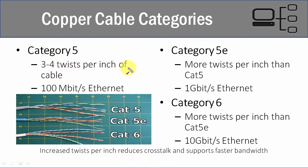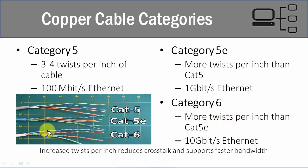Category 5 has three to four twists per inch and supports up to 100 megabits per second Ethernet. Category 5E has more twists and supports 1 gigabit per second. Category 6 has many more twists per inch and supports up to 10 gigabits per second — going from 100 megabit to 10 gigabit simply by increasing the number of twists per inch.